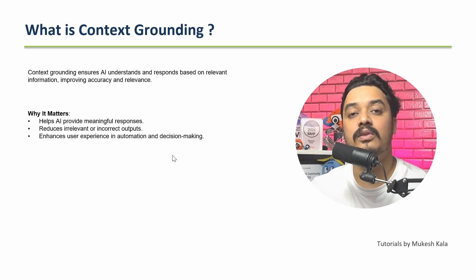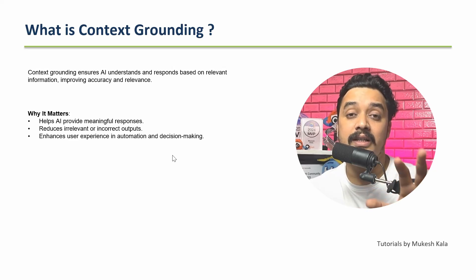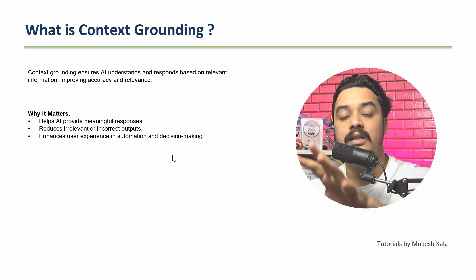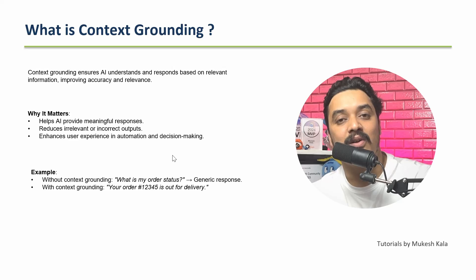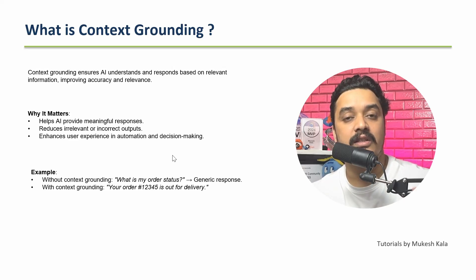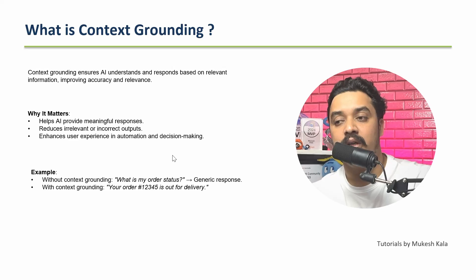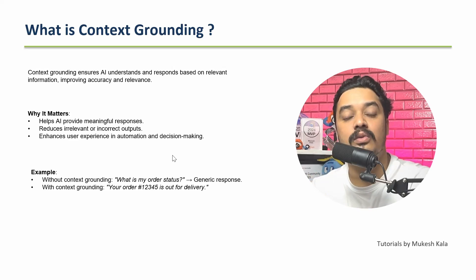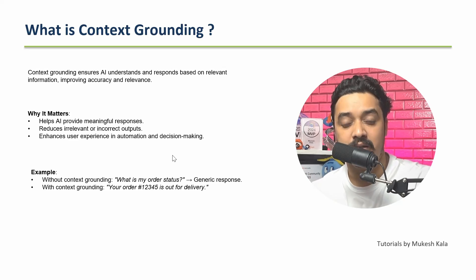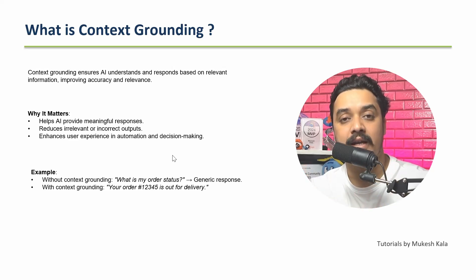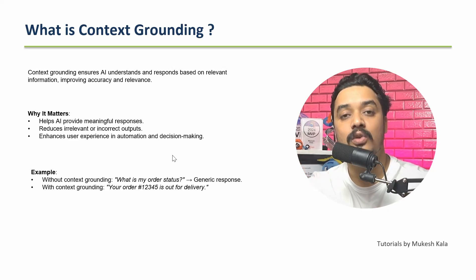Just as humans use context, AI also needs to understand the context of information before answering. For example, if I ask 'what is my order status?' without context you get a generic response from an LLM, but with context grounding you get a precise response like 'your order 12345 is out for delivery.' In simple words, context grounding means the LLM already has background knowledge about what you're referring to before you ask.